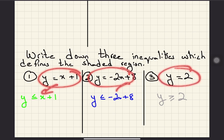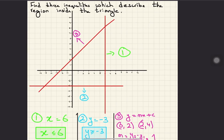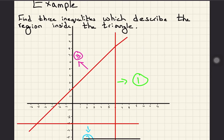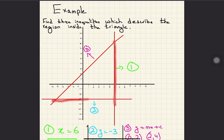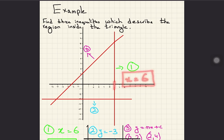These three equations change into three inequalities, defining the shaded region. Moving to the next example: 'Find three inequalities which describe the region inside the triangle.' We can see the triangle and its interior region on the graph. We need to find the equations of the three lines first.